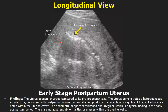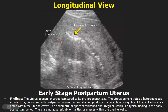The first case is early stage postpartum uterus. In this example, the uterus appears enlarged compared to the pre-pregnancy size. The uterus demonstrates a heterogeneous echo texture consistent with postpartum involution. No retained products of conception or significant fluid collections are noted within the uterine cavity. The endometrium appears thickened and irregular, which is a typical finding in the early postpartum period.